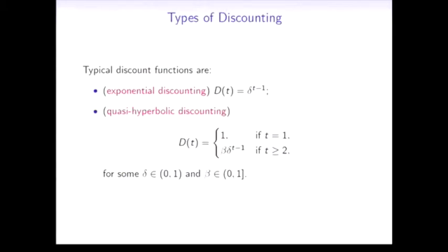The discounted utility for Alice of the consumption stream is the sum product of the discount function multiplied by the utility function. We assume that the set of outcomes in each period is the same and we may have an infinite time horizon.